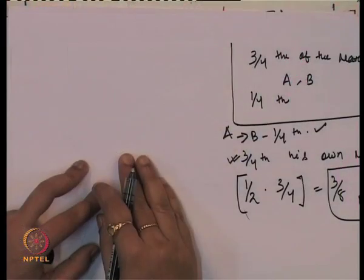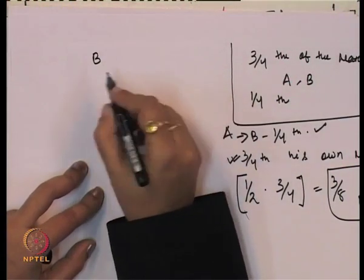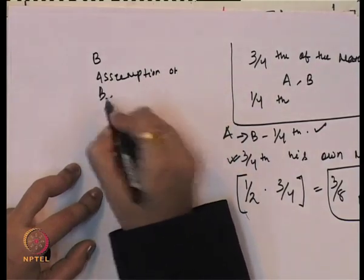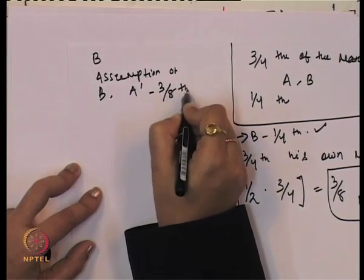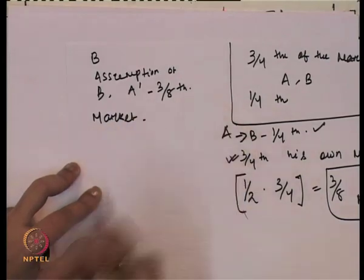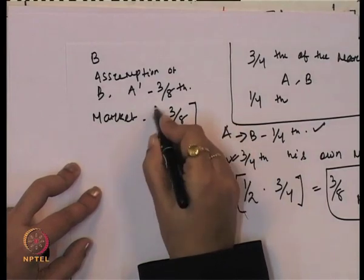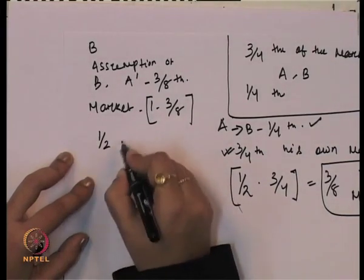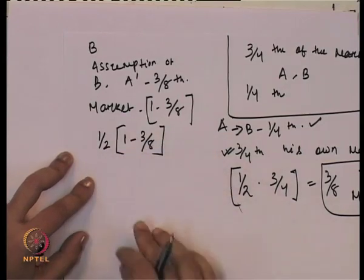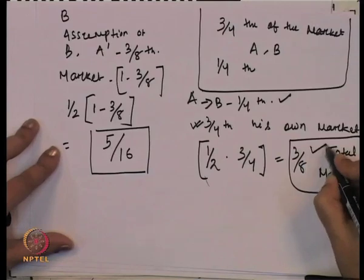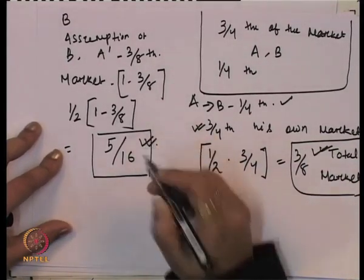Now we will see how B is going to react. B's assumption is that A will continue to produce three eighths of the market, so the market available to B is one minus three eighths, which is five eighths. B will produce half of this — half of one minus three eighths — which comes to five sixteenths. So A produces three eighths and B produces five sixteenths.